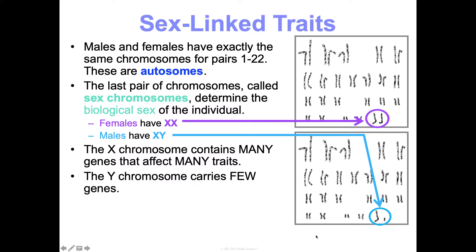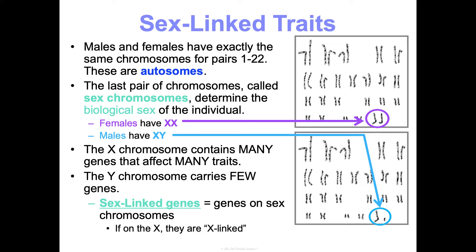Sex-linked genes are located on the sex chromosomes. X-linked genes are what we almost always discuss, because there are about 1,098 known X-linked genes compared to only about 26 on the Y chromosome. These X-linked genes have nothing necessarily to do with female anatomy — for instance, hemophilia, a blood disorder, is determined by what's on your X chromosomes. Females have two copies of each X-linked gene; males only have one, making them more susceptible to X-linked conditions because the Y chromosome cannot mask the trait.